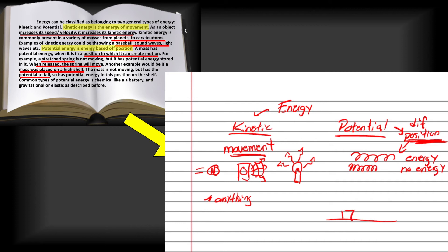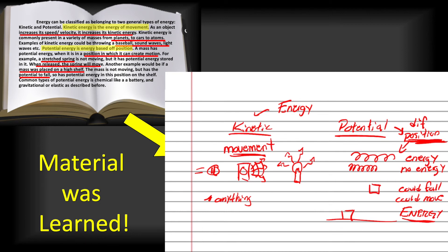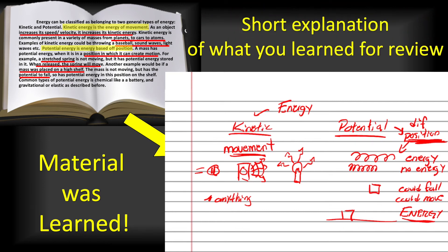In that example, I was trying to show how you have to think through the information and have it make sense before you write anything down. In this case, the material was learned. If you could explain it on a sheet of paper, then writing down that explanation helps solidify it in your brain. And you also have a short explanation of what you learned for reviewing later for tests.